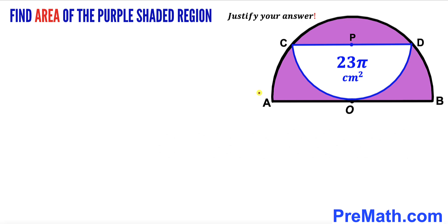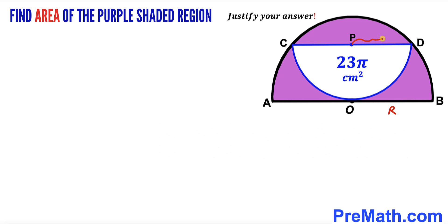Here is our very first step. Let's go ahead and label the radii of these two semicircles. We'll assume the radius of the larger semicircle is represented by uppercase R, and the radius of the smaller semicircle will be labeled as lowercase r.